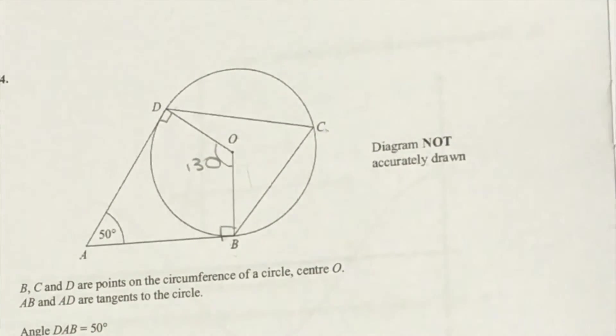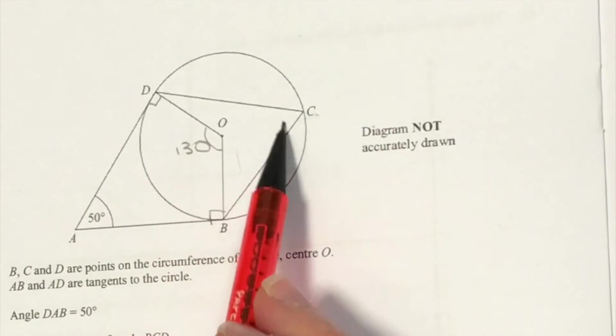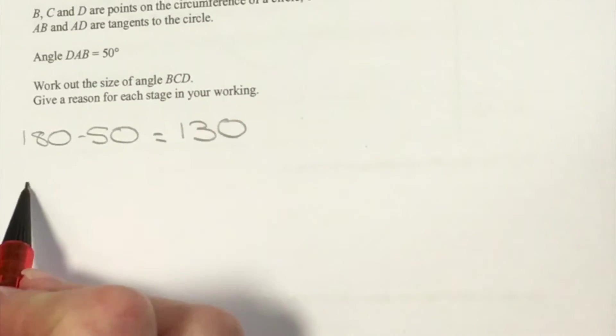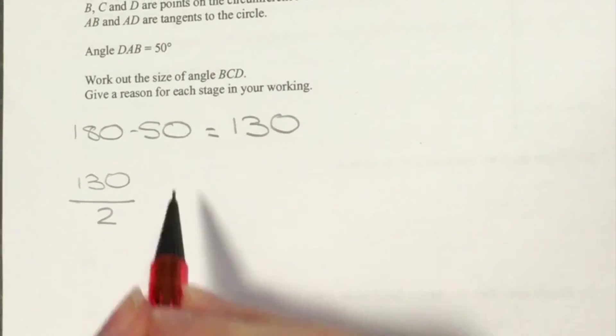Since angles at the circumference are half of the angles in the center, we'll have to divide 130 by 2, which equals 65.